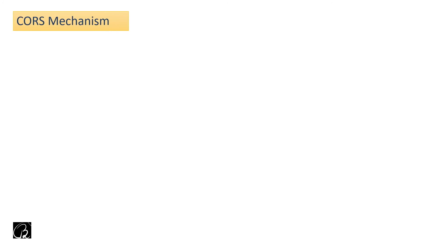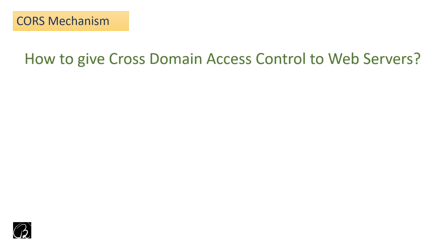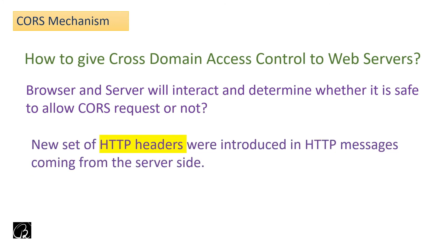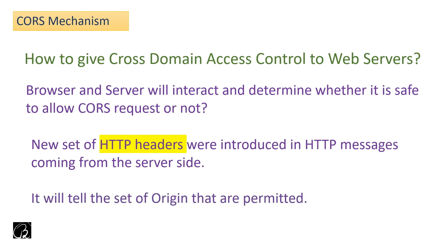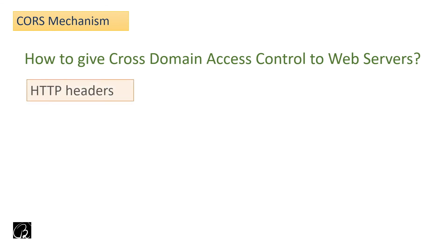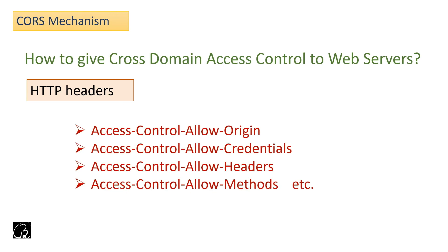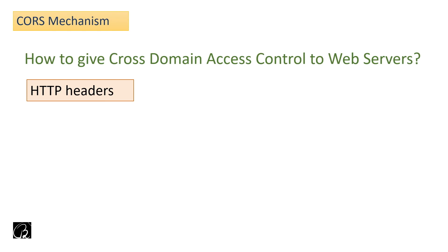Now let's talk about the CORS mechanism. We need to tell the browser that a particular origin or API is authentic and should be allowed. The browser and server both interact to determine whether it is safe to allow a CORS request. To do this, a new set of HTTP headers were introduced in HTTP messages coming from the server side. These headers tell the browser which origins are permitted to access the resource.